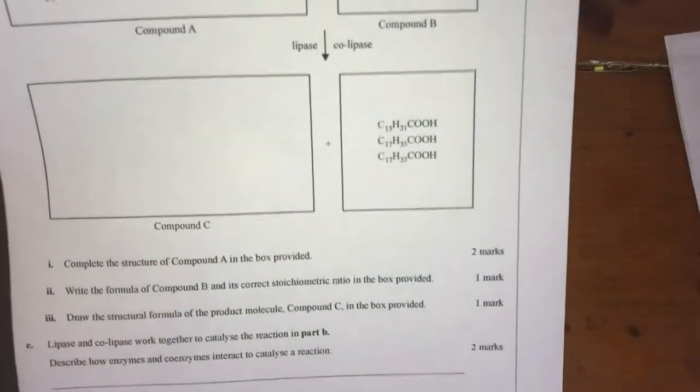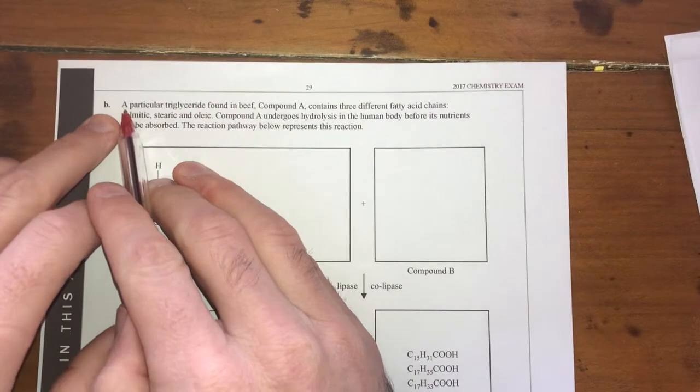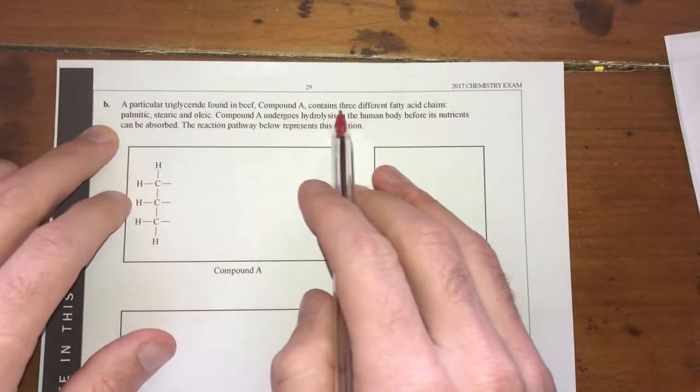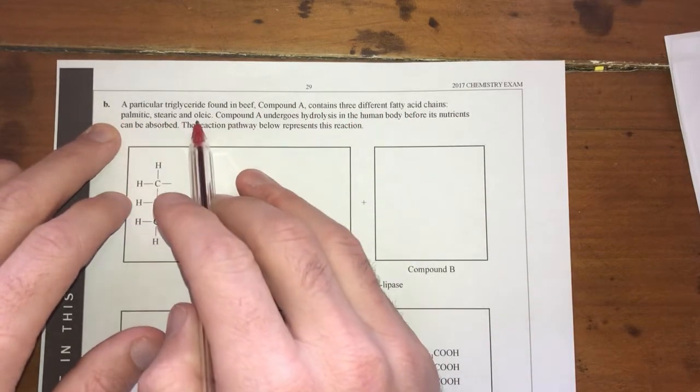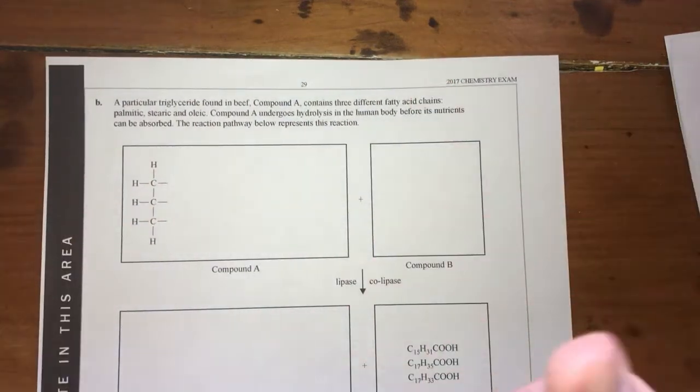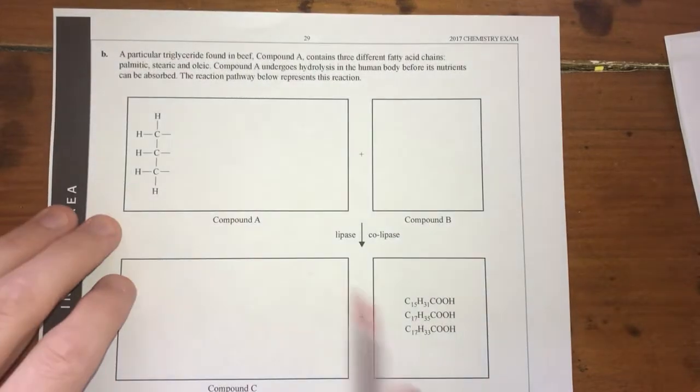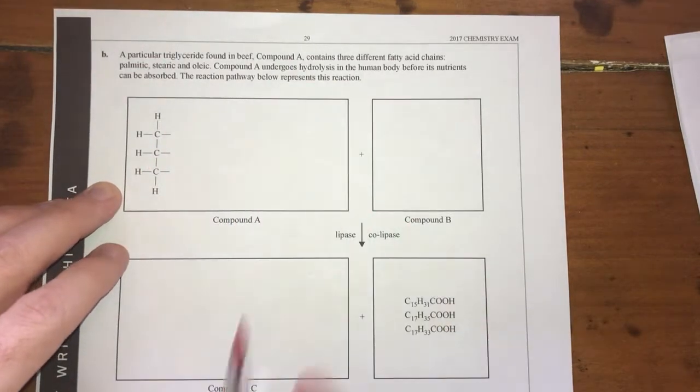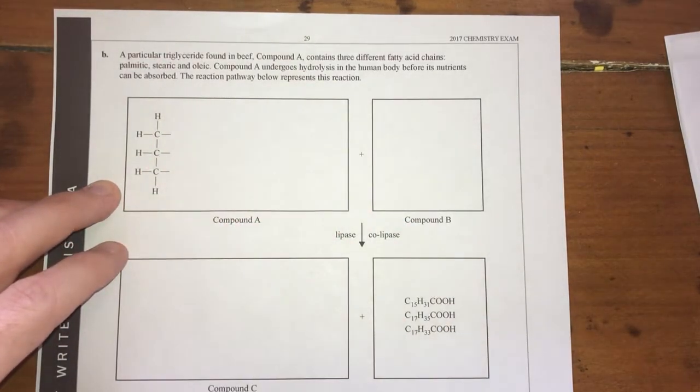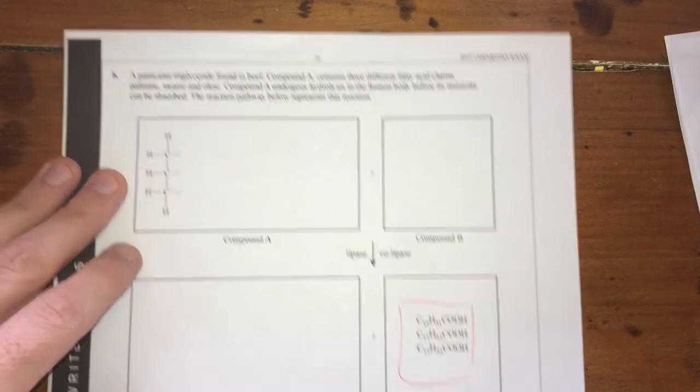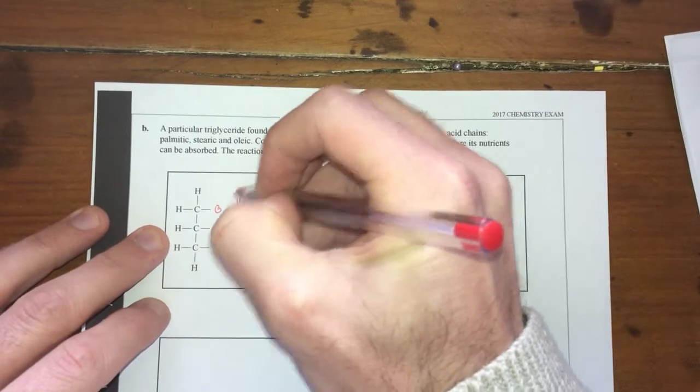So, that's those two answered and explained. Moving on to part B. A particular triglyceride found in beef. Compound A contains three fatty acid chains: palmitic, stearic and oleic. Compound A undergoes hydrolysis within the human body. So basically, this is going to be what happens when your fats break down. And knowing that we have three different fatty acids here, I'm guessing we have to draw the full triglyceride.